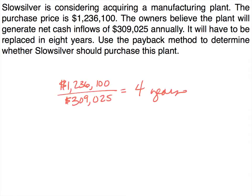What you should have found is 4 years. We took the cost of the investment, $1,236,100, and divided it by the annual cash payments of $309,025. So this investment pays itself back in 4 years. Is it a good investment? Yes — because you believe it's going to last 8 years, and the investment pays itself back in 4 years, which is half its useful life. Therefore, it's a good investment per the payback period.